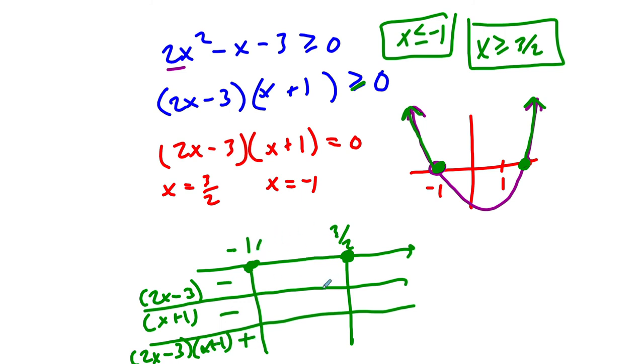Pick a number between negative 1 and 3 halves. Plug in 0, I get a negative—0 minus 3 is negative—a positive, that's negative. And then if I plug in 2, I get 4 minus 3, which is positive. 2 plus 1 is positive. It's a positive ratio. So you can see that it's in this region and this region here.